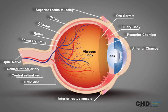The anterior chamber is the front section of the eye's interior, where aqueous humor flows in and out, giving nourishment to the eye and surrounding tissues.